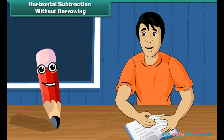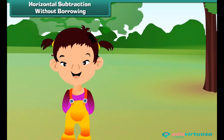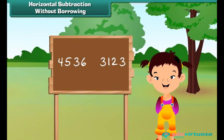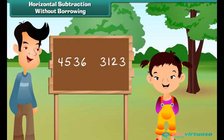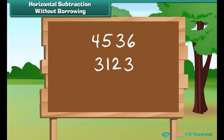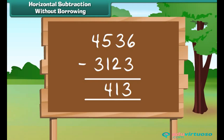Let us now move on to subtraction. Wendy went on a picnic last Saturday. The picnic spot had two boards with two different numbers written on them: 4536 and 3123. Her father asked her to find the difference. We write the bigger number above and the smaller number below, then subtract at the ones place, the tens, the hundreds, and finally the thousands. The answer is 1413.